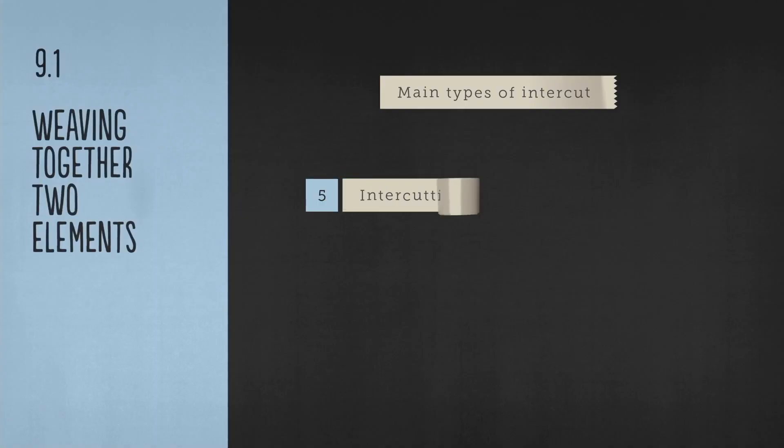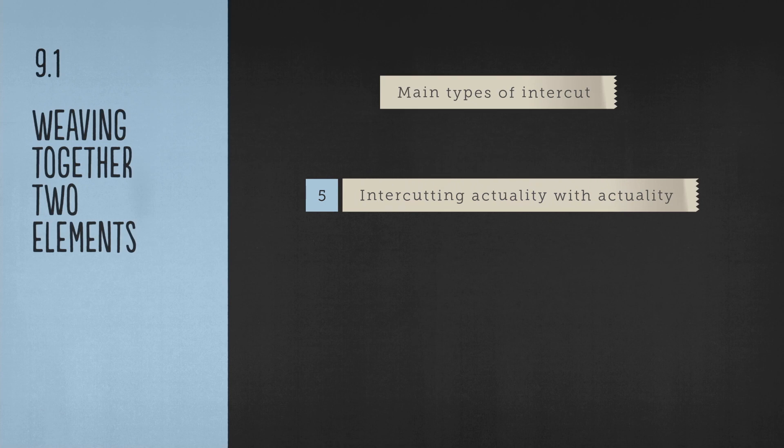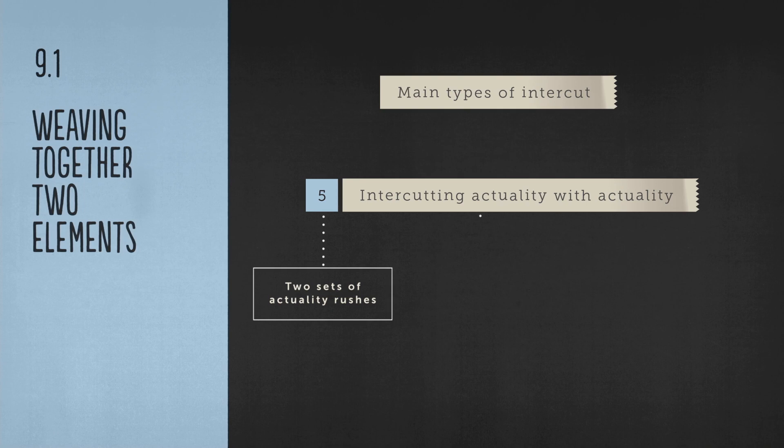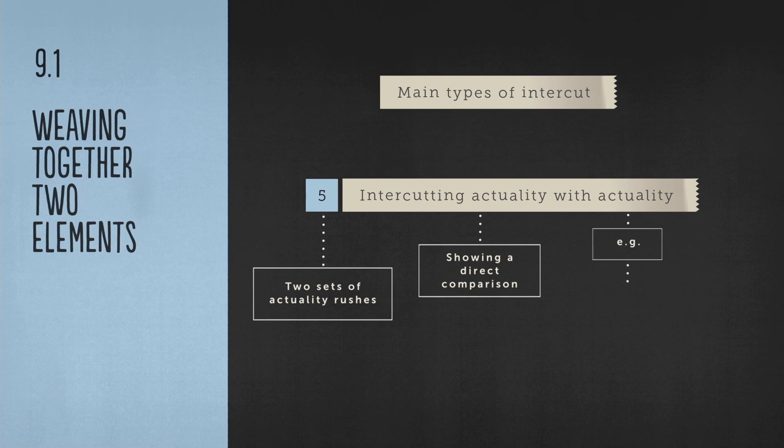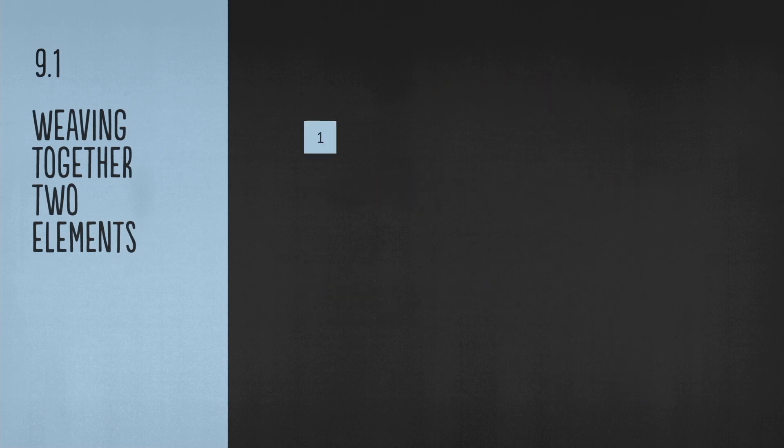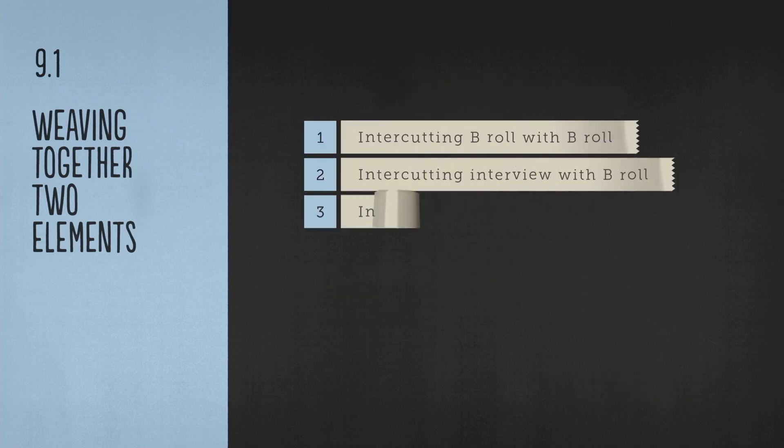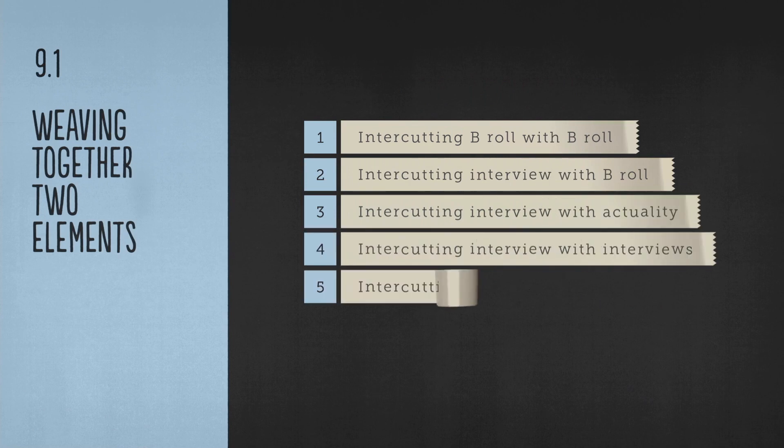Number five, intercutting actuality with actuality. If there are two sets of actuality rushes, theoretically happening at the same time, we may want to weave them together to show a direct comparison between the two. For example, think of a competition or race between two different characters or groups in an entertainment show.